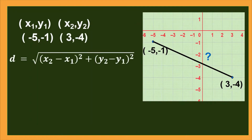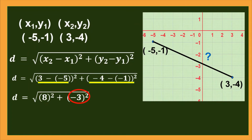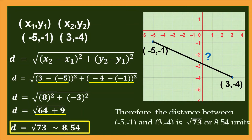Then use the distance formula. Identify x₂ as 3, x₁ as negative 5, y₂ as negative 4, and y₁ as negative 1. Then substitute, simplify, find the squares, and simplify again. Therefore, the result is D equals the square root of 73, or approximately 8.54. So the distance between these two given points is the square root of 73, or approximately 8.54 units.